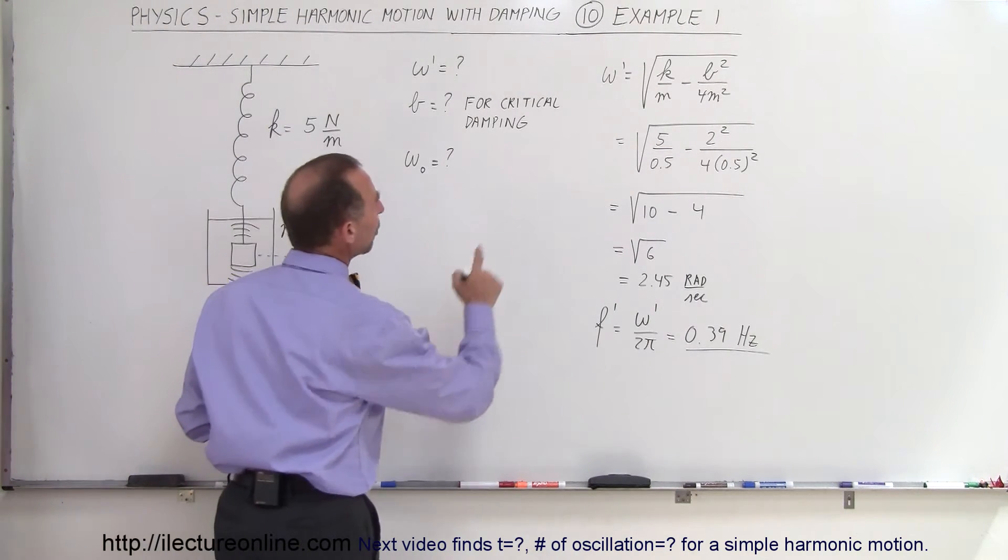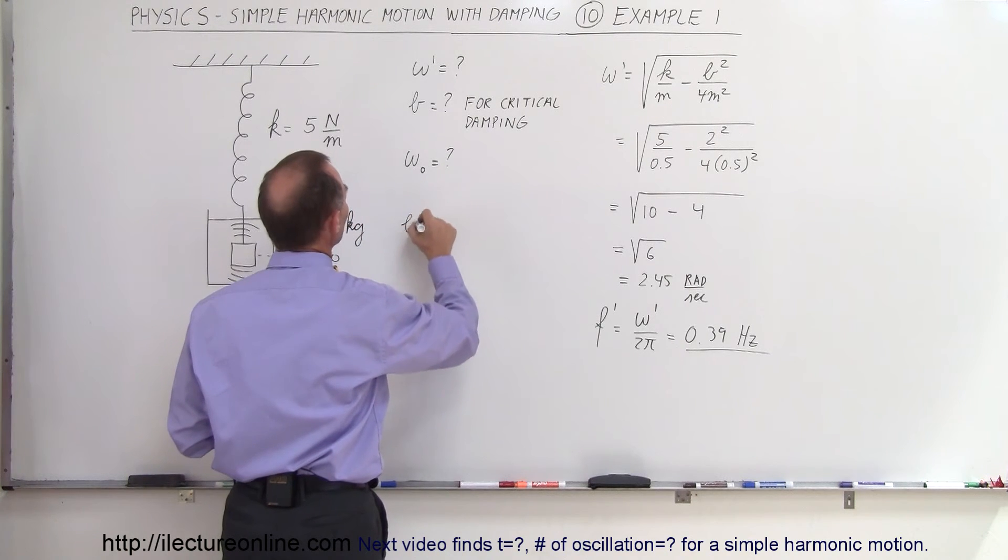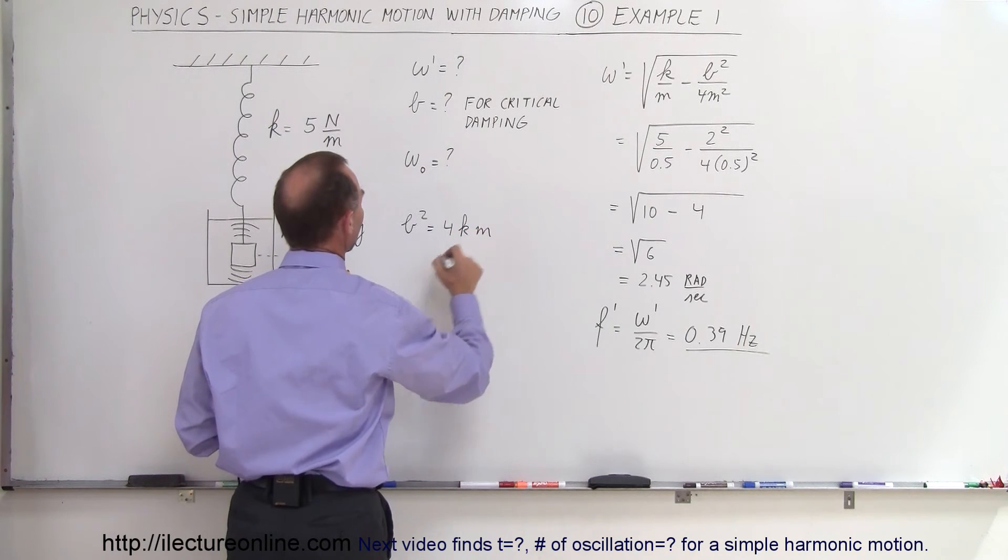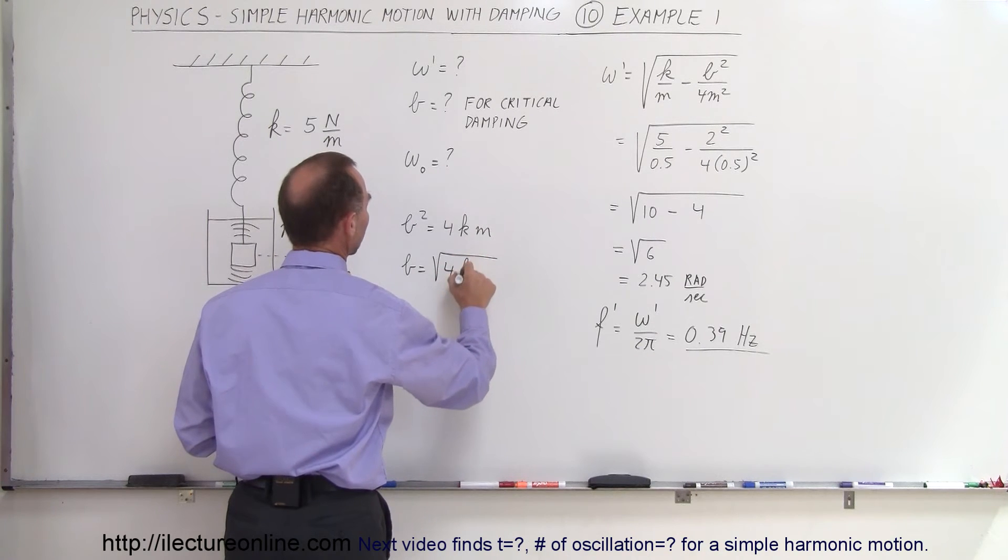Well, for critical damping, you want that quantity to be equal to 0, so you want b squared to be equal to 4km. Alright, so b would be equal to the square root of 4km.